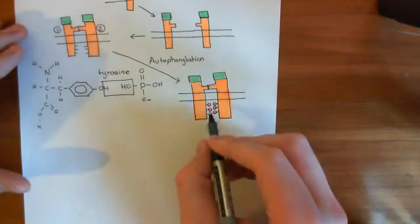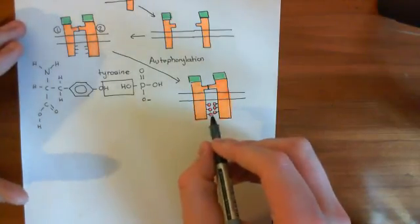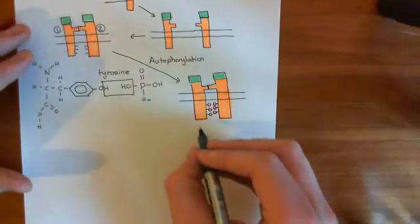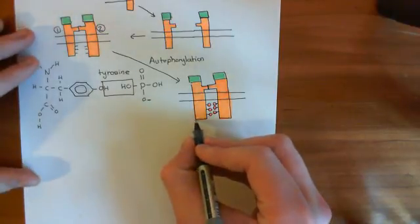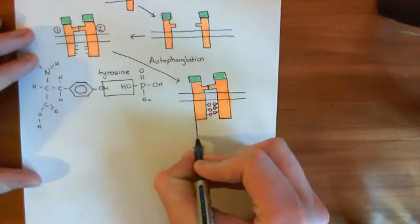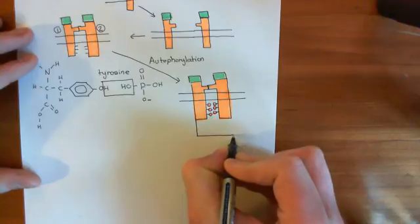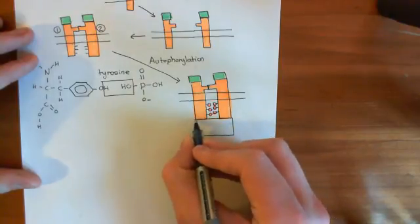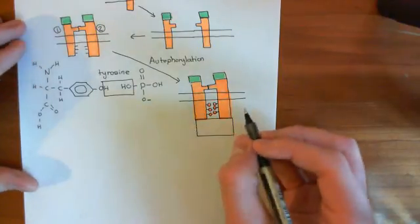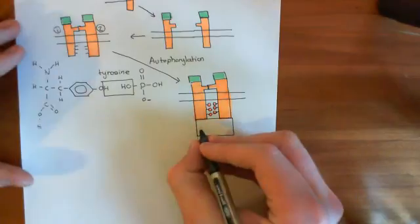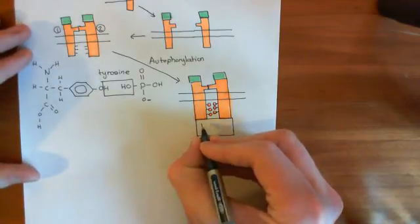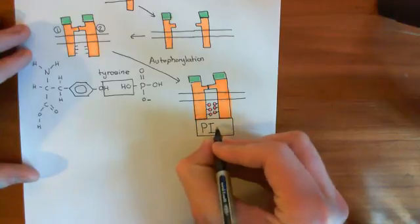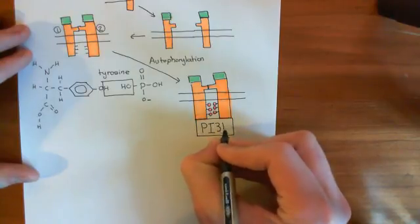The first enzyme that's going to come in and bind to these phosphorylated tyrosine residues is an enzyme known as PI3 kinase, after which this entire pathway is named. This is PI3 kinase, which is often denoted PI3K.